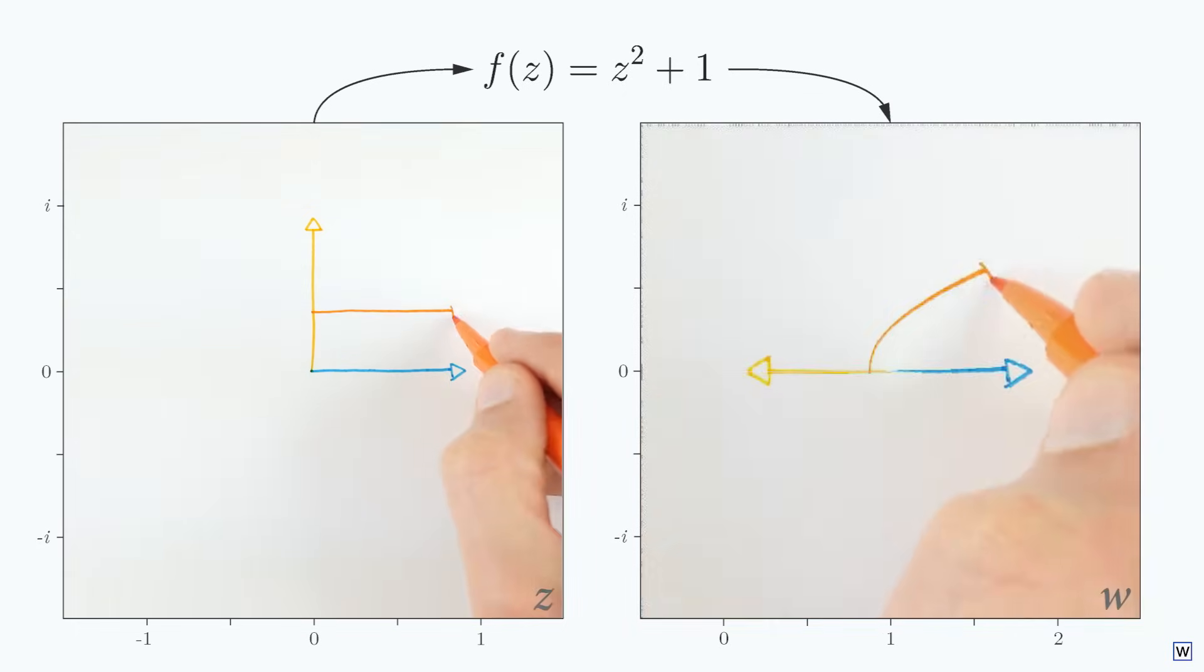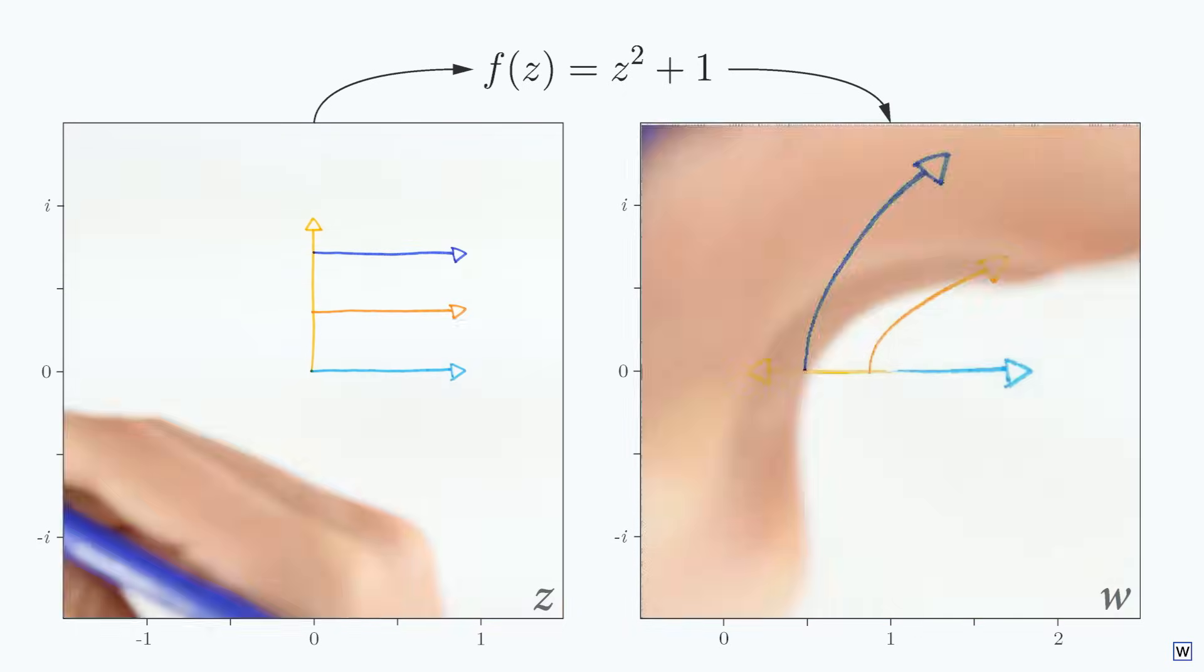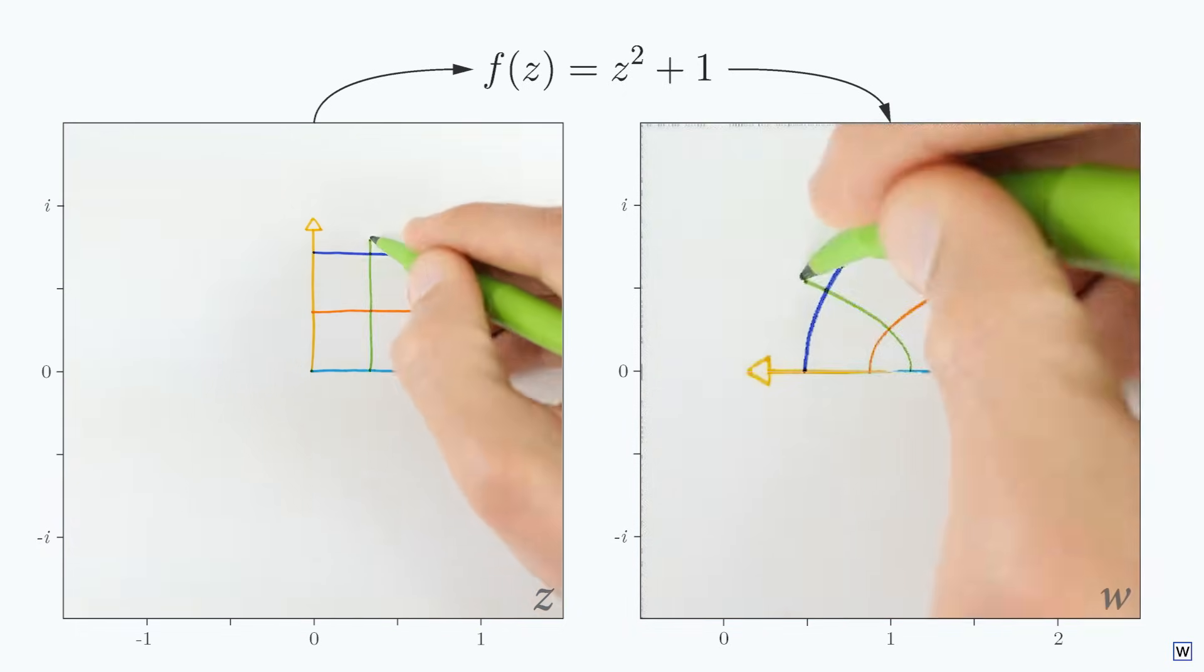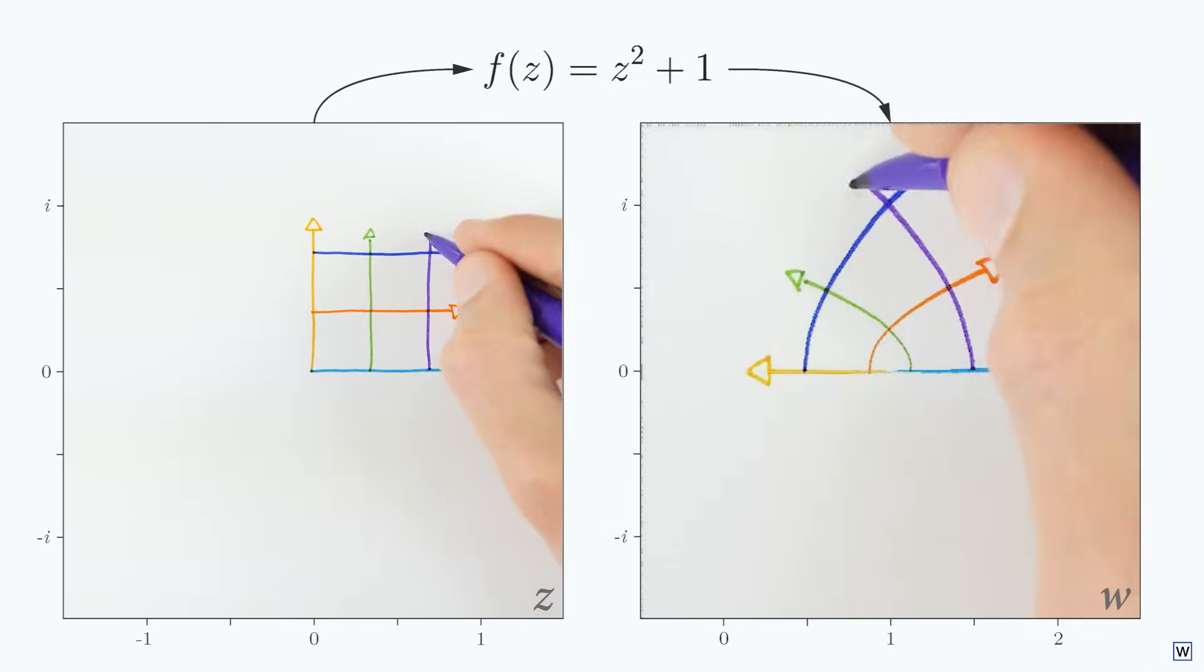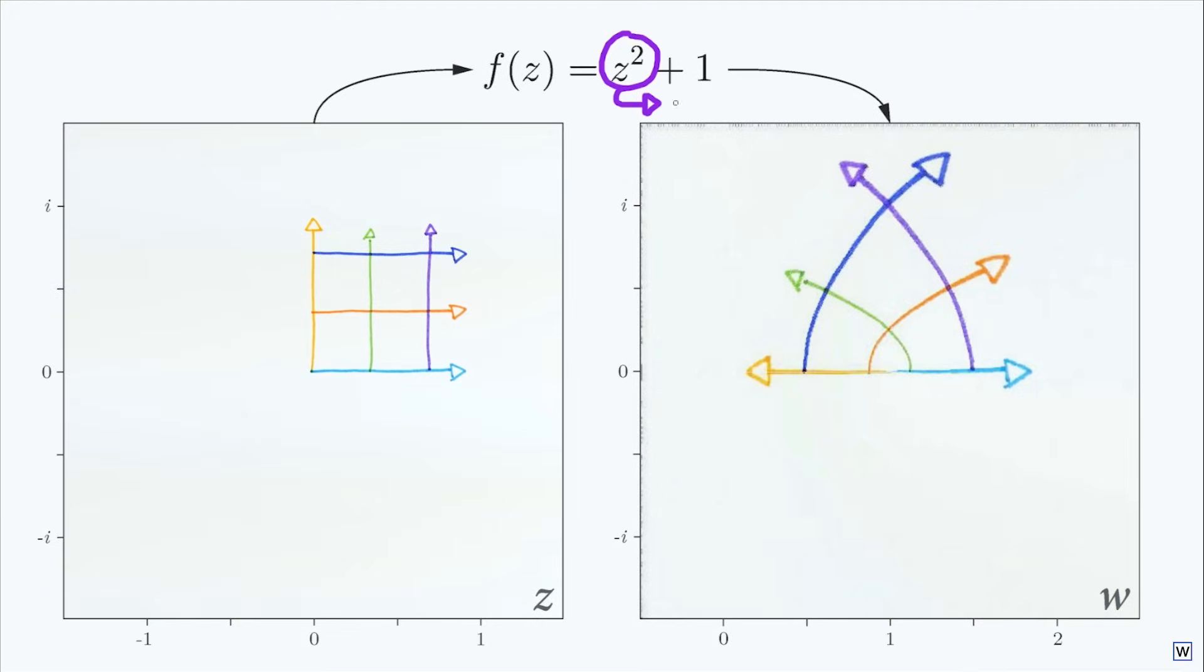Last time, we left off trying to think of shapes to draw on our input plane that would help us better understand our function f(z) = z² + 1. Since z² means to multiply z by itself, and z is a complex number, our function's behavior should have some connection to complex multiplication.